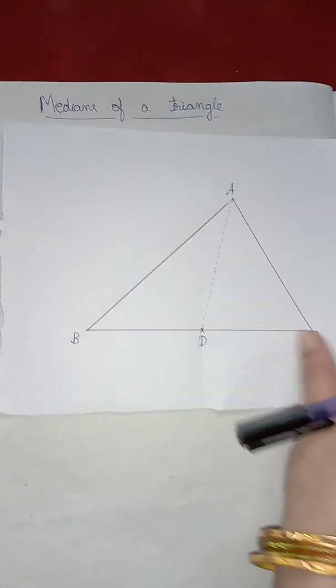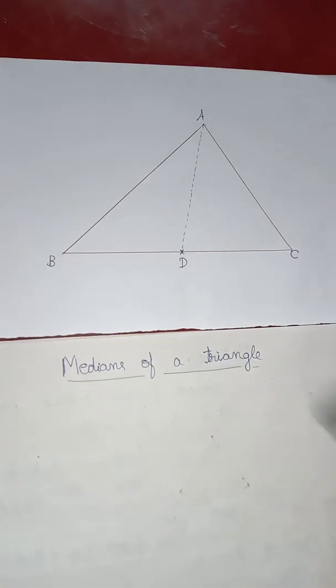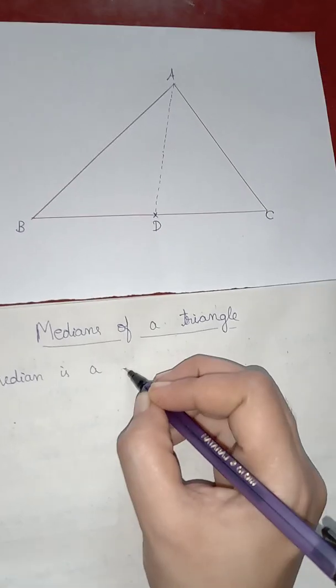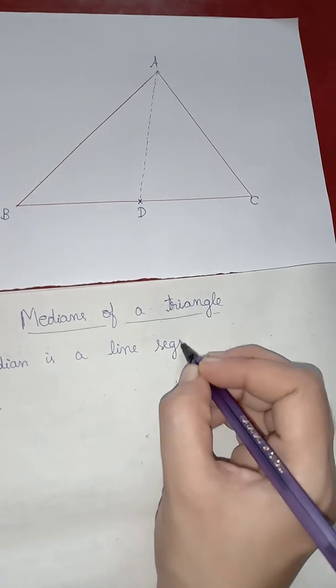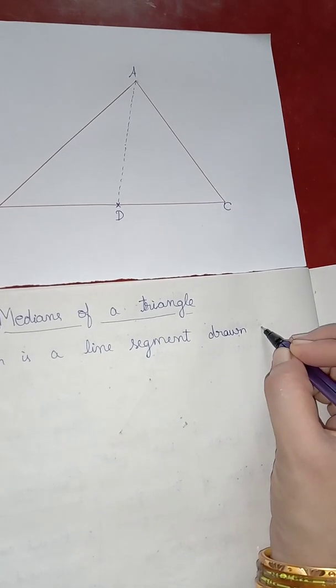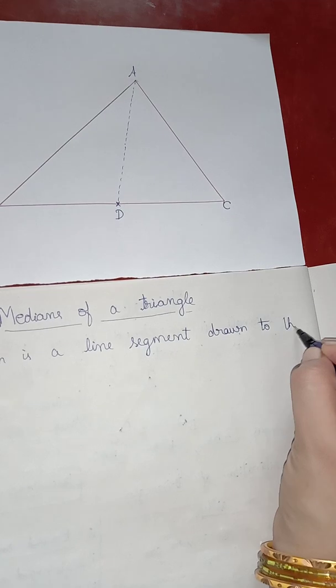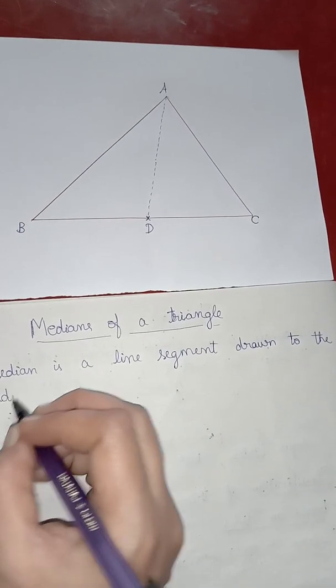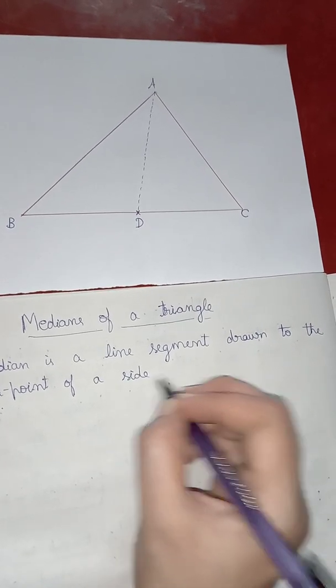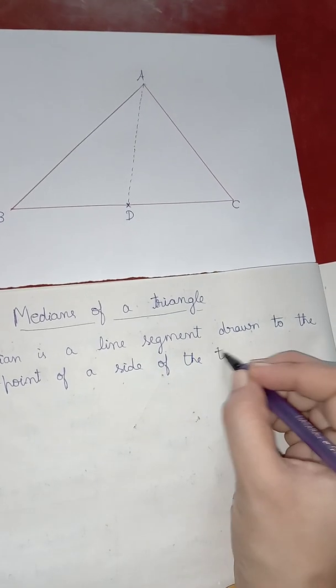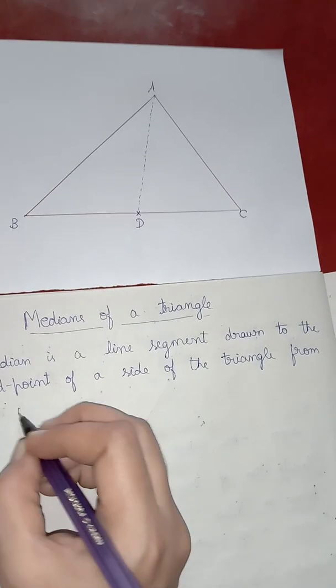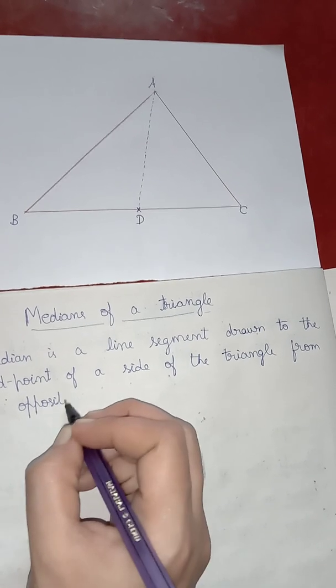So, what is a median? Median can be written as a median is a line segment drawn to the midpoint. A D is the median of a side of the triangle from an opposite vertex.